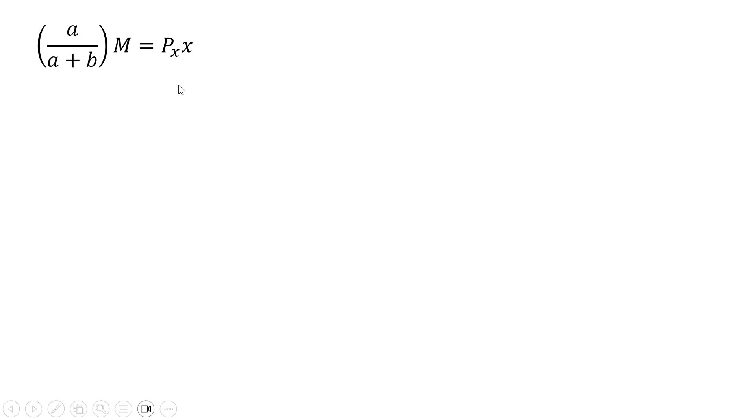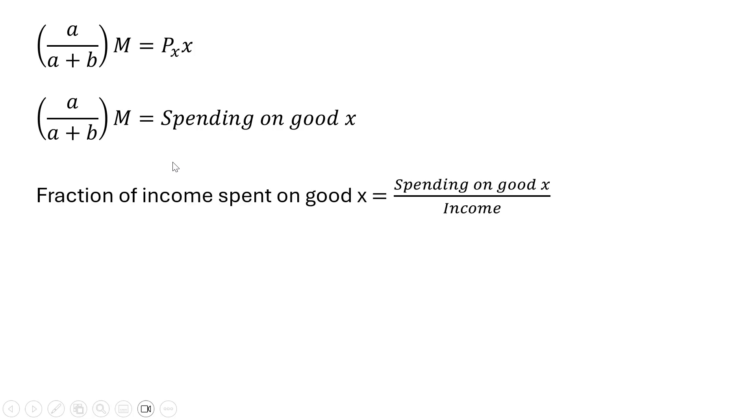So that was our last result, where Px*x represents spending on good x. To get the fraction of income spent on good x, we divide the spending on x by income M. The spending on x is in the numerator, and total income is M. The M's cancel, giving us our final result: the fraction of income spent on good x equals a/(a+b). That's it.